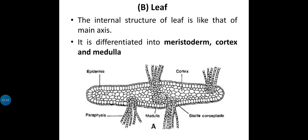Here is the total diagram of leaf structure which you may be asked about in the exam. The outermost layer is the epidermis. Next is the cortex, which is a large cell structure. Then there are sterile conceptacles, which are a reproductive part, followed by the medulla, and paraphysis which is also part of reproduction. So leaf structure consists of: mesoderm, cortex, and medulla.